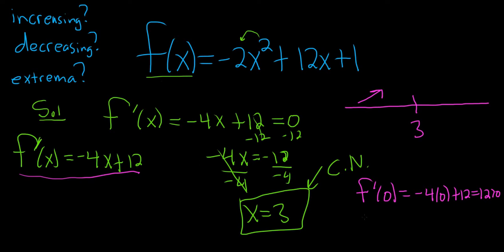How about a number that is bigger than 3? So now you pick any number bigger than 3, any number you like over here. So how about 4? So f prime of 4, that'll be negative 4 times 4 plus 12. That's negative 16 plus 12, which is negative 4. Negative 4 is less than 0. That means it's decreasing over here.